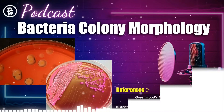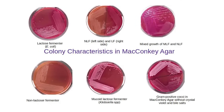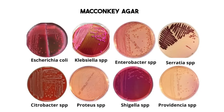How does the specific type of agar plate influence what you see? We use selective and differential media for exactly this reason. Selective means they encourage certain bacteria to grow while inhibiting others. Differential means they allow us to visually distinguish between the bacteria that do grow, usually based on their metabolism — how they break down nutrients in the agar — and this often shows up in their colony appearance. So the plate itself acts like a filter and a visual test strip.